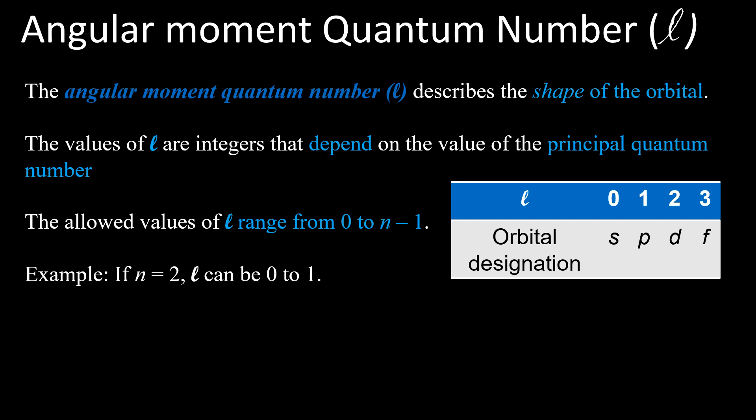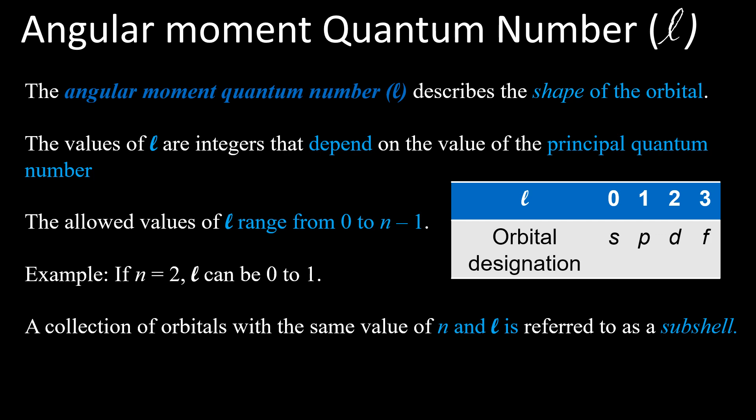L starts from 0 onwards. If L = 0, that is referred to as the s orbital. L = 1 is the p orbital. L = 2 is the d orbital. L = 3 is the f orbital. For example, if n = 2, then L ranges from 0 to n−1 = 1, so L = 0 and 1, meaning it has both the s orbital and p orbital. A collection of orbitals with the same value of n and L are referred to as a subshell. S, P, D, F are considered as subshells.